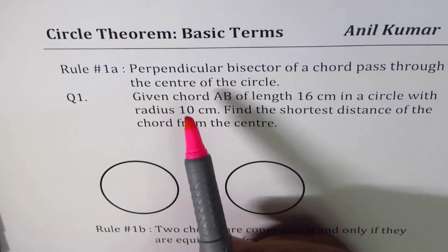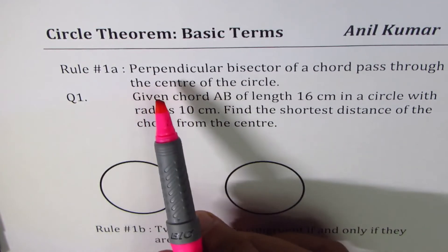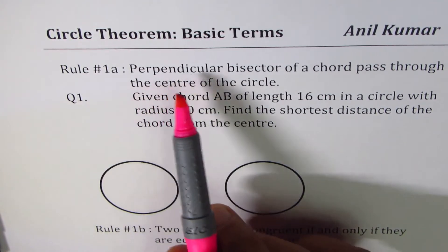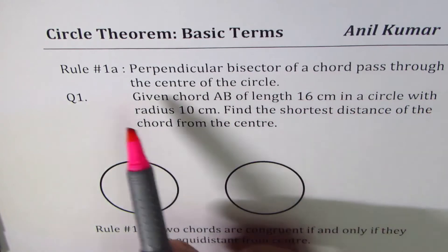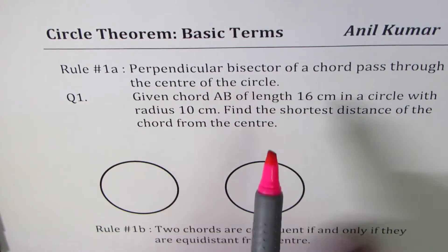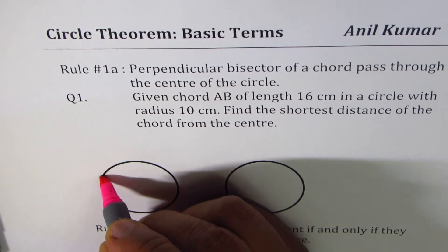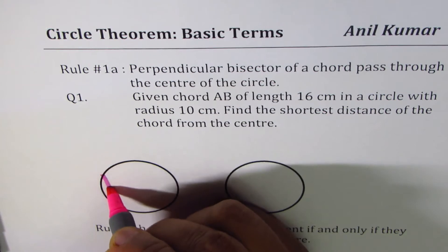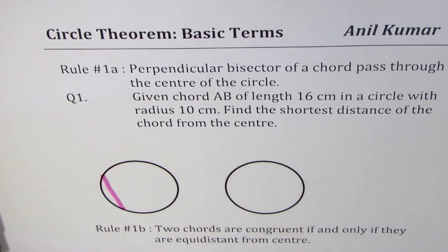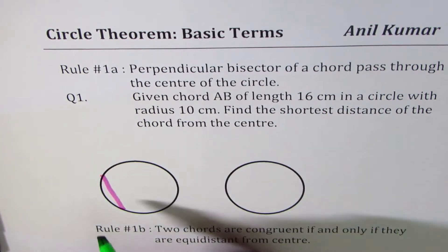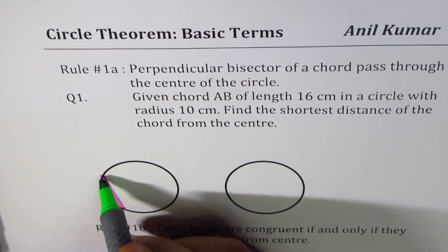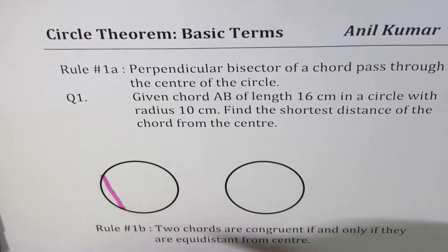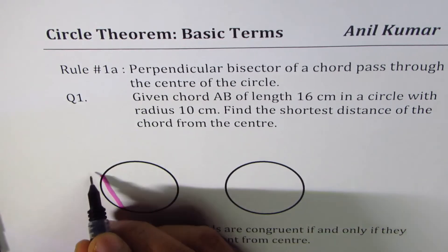Let's understand this particular rule. It says the perpendicular bisector of a chord passes through the center of the circle. A chord, as you know, is a line joining two points on the circumference of a circle. Let me call this chord AB.